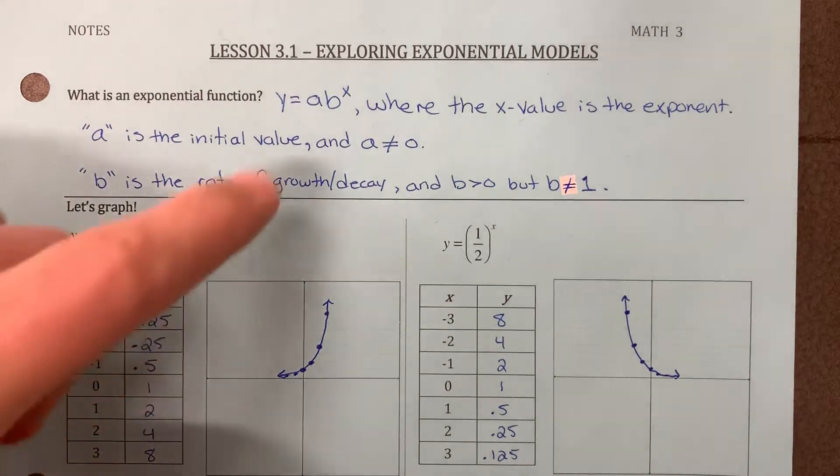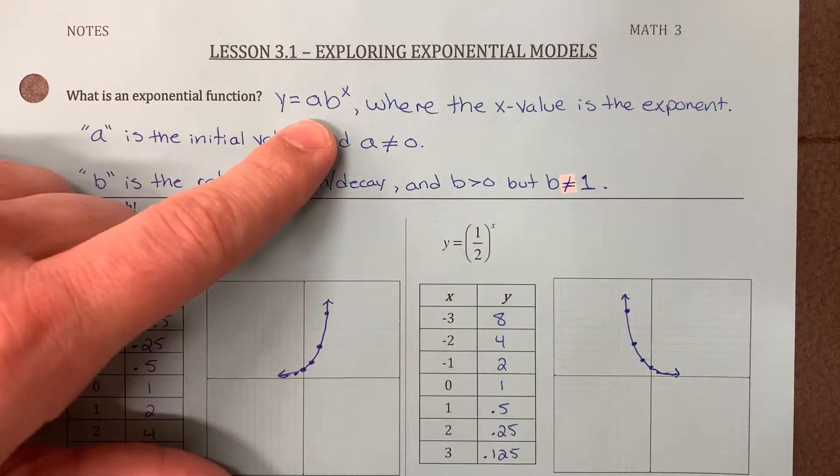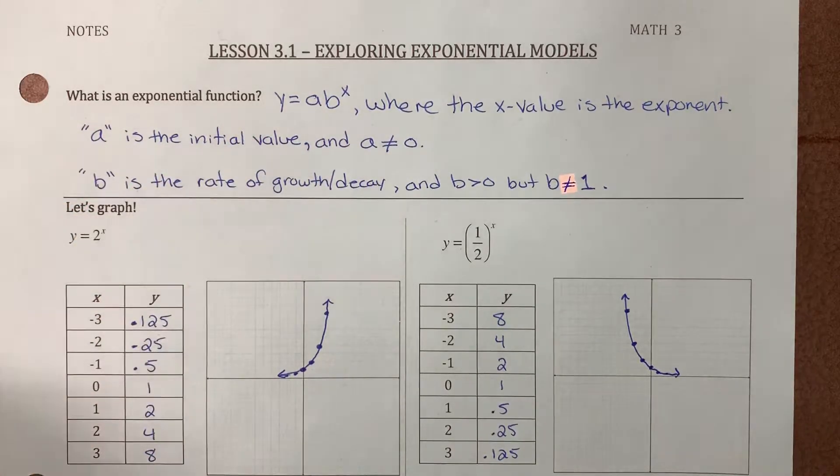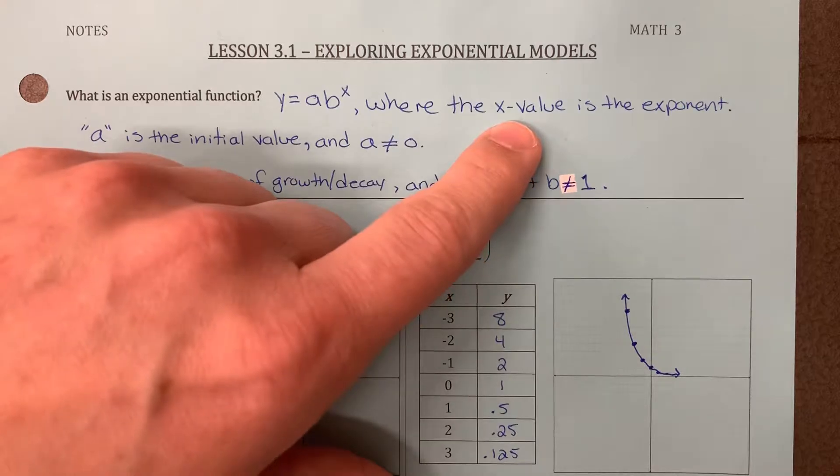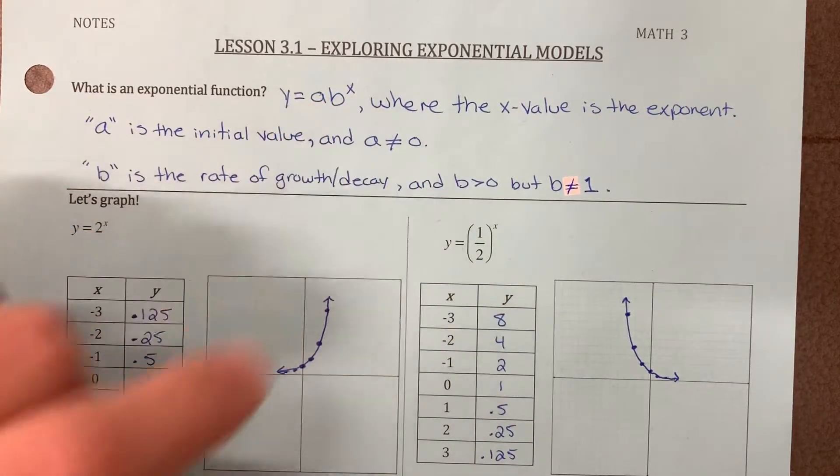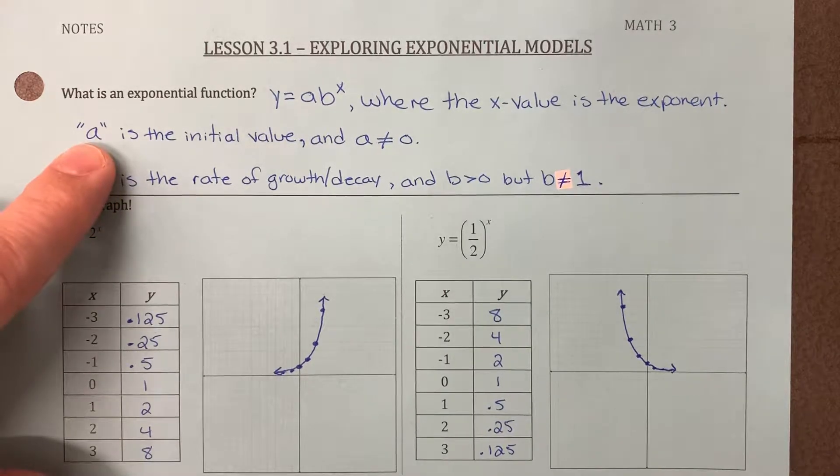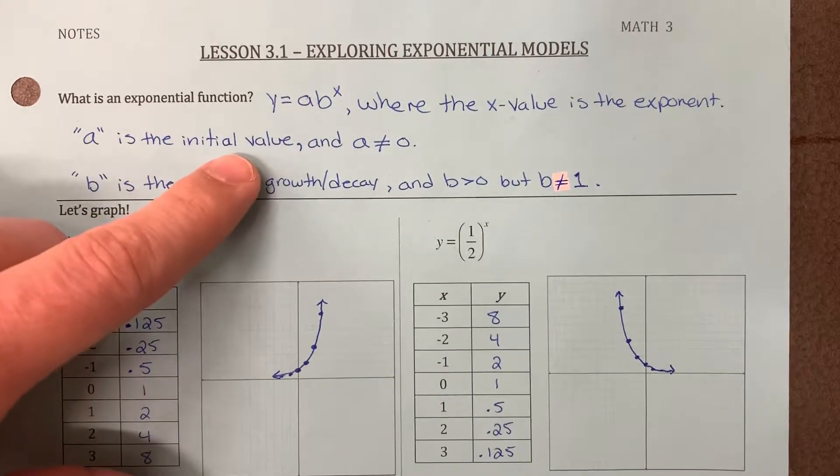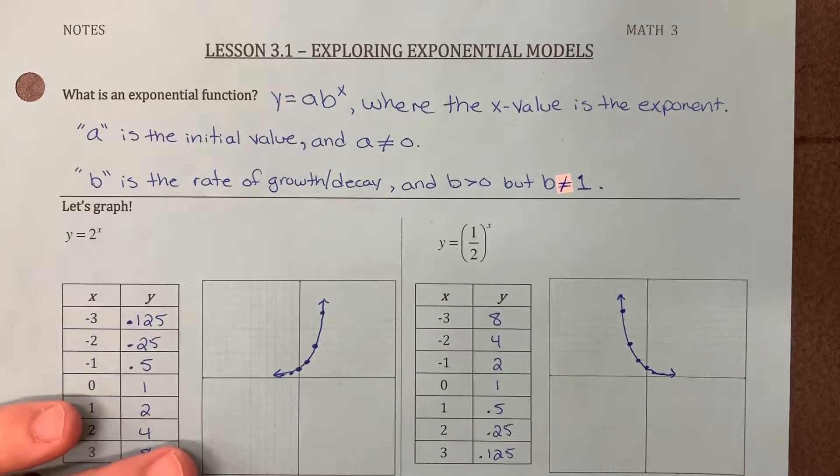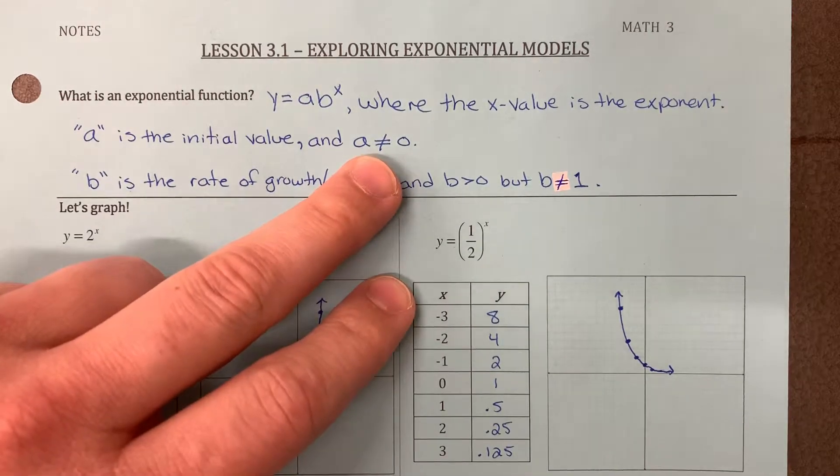So what is an exponential function? Well here's the equation, y equals a times b to the x power, where x, how do we know that it's an exponential function? The x is going to be the exponent. As far as the a and the b, the a value, that's your initial value or your starting amount. The catch is that a cannot be equal to 0.